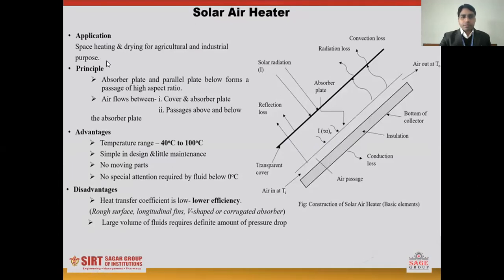The conventional solar air heater is essentially a flat plate collector with an absorber plate. Here you can see the absorber plate, and a transparent cover is also there at the top. Insulation is provided at the bottom and sides of the solar air heater — this is the insulation.